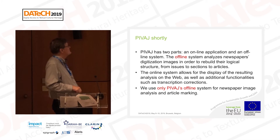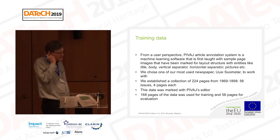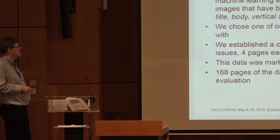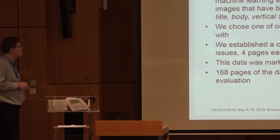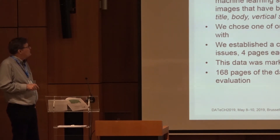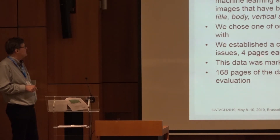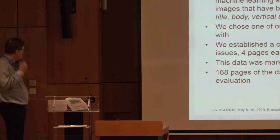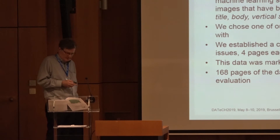From the user's perspective, it's a machine learning software you have to train — you need sample pages marked for layout structure with entities like title, body, vertical separator, horizontal separator, pictures, and so on. We took one of our newspapers, Uusi Suometar, a main newspaper from the late 19th to early 20th century, and extracted 224 pages from 56 issues covering that time period. The publication was four pages only. This data was marked with the BIVAGE editor: 168 pages used for training and 56 for evaluation.